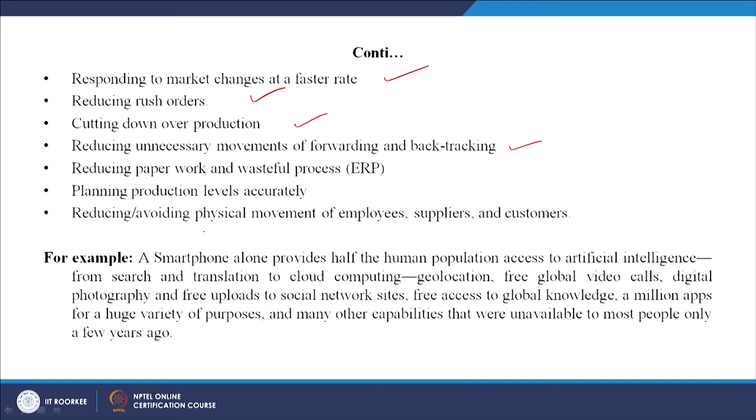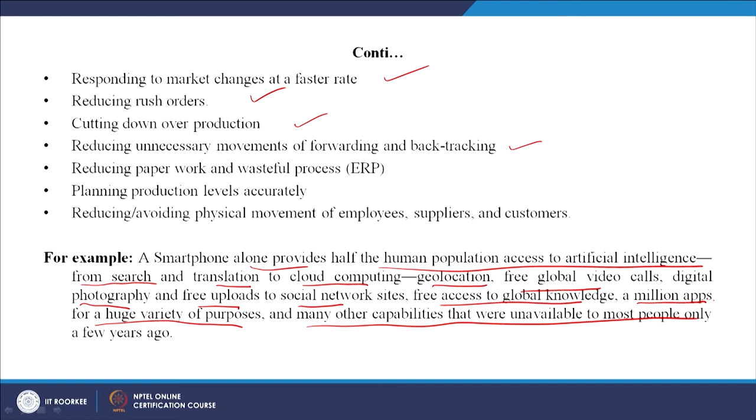A smartphone alone provides half the human population access to artificial intelligence — from search and translation to cloud computing, geolocation, free global video calls, digital photography, free uploads to social network sites, free access to global knowledge, and a million apps for a huge variety of purposes — capabilities unavailable to most people only a few years ago. It feels as if we have come into a completely new world with a new thought process, and the pace of change is so dynamic yet easy to adapt to.